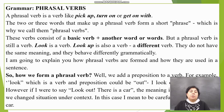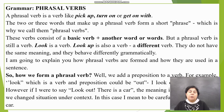Now we are going to talk about grammar — specifically, phrasal verbs. What does 'phrasal verb' mean? A phrasal verb is a verb like 'pick up', 'turn on', or 'get on with'. The two or three words that make up a phrasal verb form a short phrase, which is why we call them phrasal verbs. These verbs consist of a basic verb and another word or words, but the phrasal verb is still a verb. For example, 'look' is a verb, 'look up' is also a verb, but it has a different meaning. They don't have the same meaning and they behave differently grammatically.